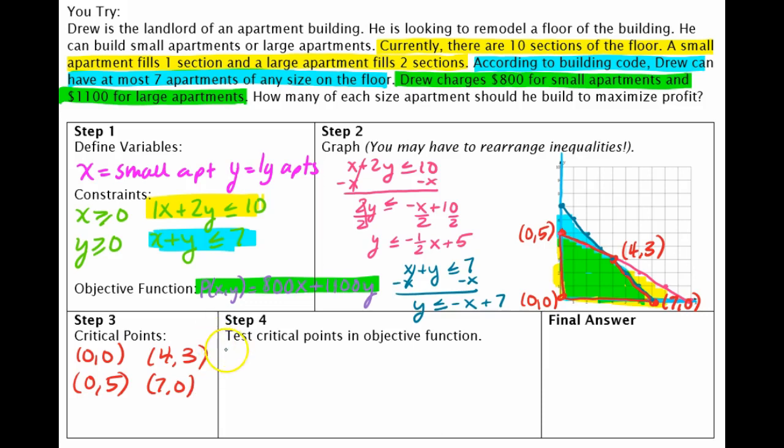So the first thing I'm going to do is P of 0, 0. And this one is kind of silly because if you rent out zero apartments, you're going to make zero dollars. So that one is not going to be my answer because I would make zero dollars profit.